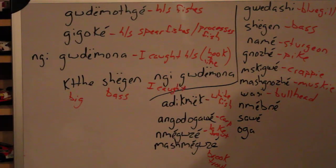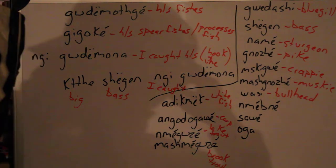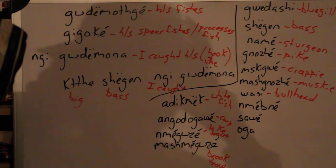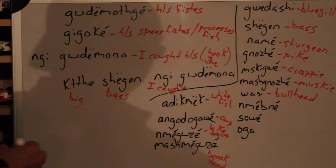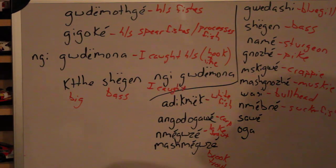Below there we have namabana. Namabana — if you've seen the video with the months, you know namabana is a sucker fish. Below there we have sawe — sawe is a perch.